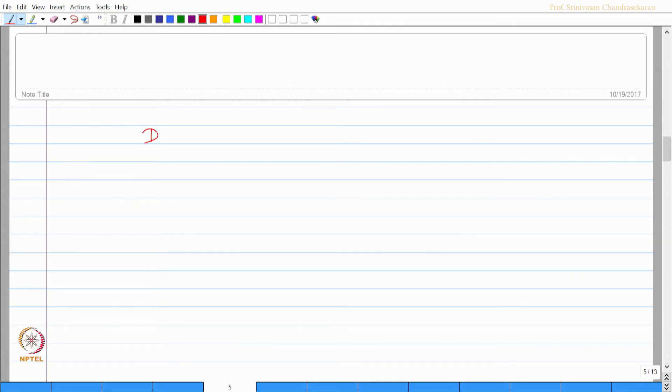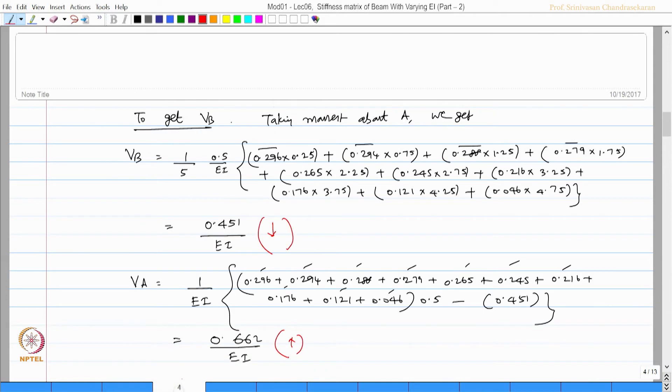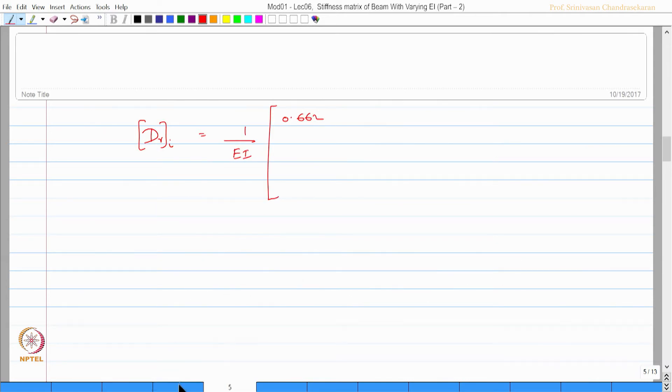So friends, now I have got the flexibility matrix of the i-th element, which is the flexibility 1 by a_i of 0.662. That is what v_a is, and v_b is 0.451 down, so minus 0.451 is the first column. Now I want to get the second column, that is a_21, a_12, and a_22.